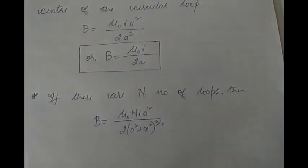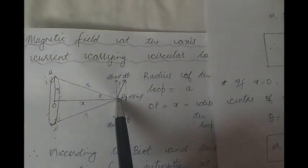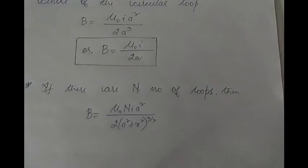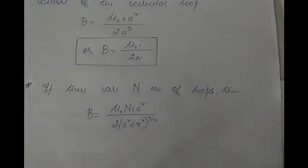Another case: if there are N number of loops, the magnetic field intensity at point P will simply be N times the expression. That is, B = μ₀ N I A² / [2(A² + X²)^(3/2)]. Remember this.